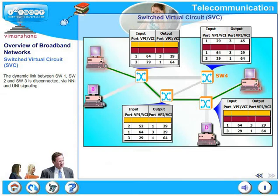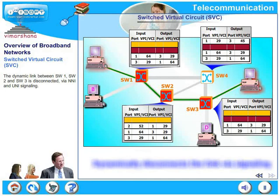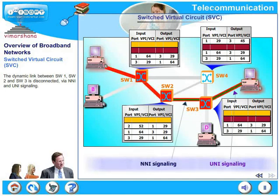The dynamic link between SW1, SW2, and SW3 is disconnected now via UNI and NNI signaling. And the connection is broken now.